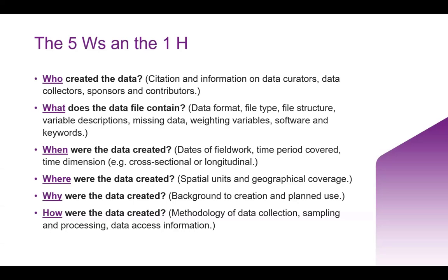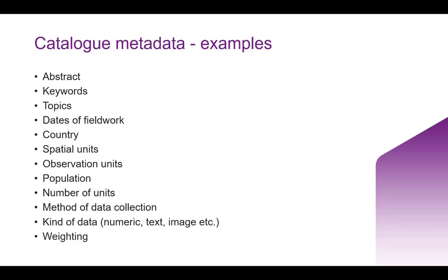Overall, the key question is: what would someone with no prior knowledge of the project or of the data need to be able to understand and use that data correctly in their own research? Some of the metadata that we capture on the UK Data Service catalog pages includes an abstract, a set of keywords and topics — which in our catalog are based on a standardized schema where you search and select from a list — the dates of fieldwork, country, information about the sample including observation and analytic units, population, and the number in your sample.